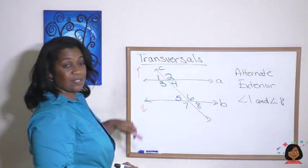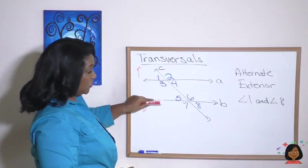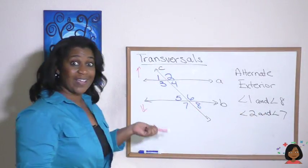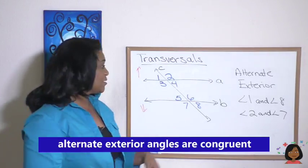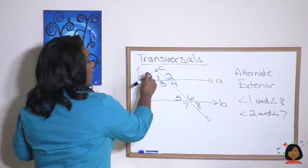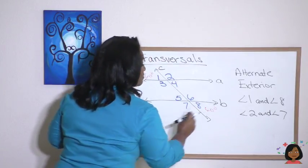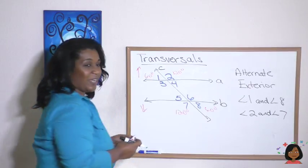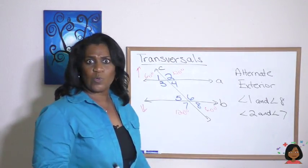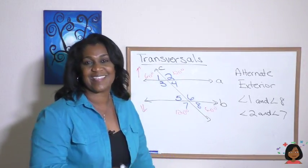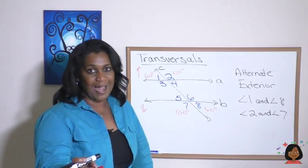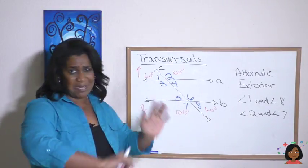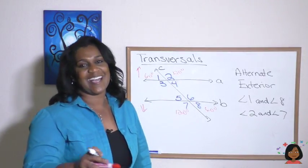Similarly, angles 2 and 7 are alternate exterior angles. Alternate exterior angles are congruent, so if angle 1 is 60 degrees, angle 8 is also 60 degrees, and if angle 2 is 120 degrees, angle 7 is also 120 degrees. What's great about all of these definitions is that when you know just one angle, you can fill out all the other angles in the figure. Make sure you hit the practice problems — it's going to be a blast! See you next time!